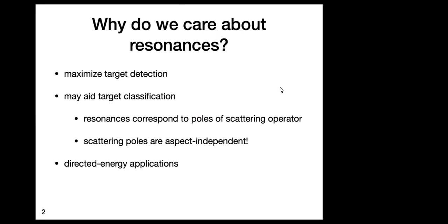This is mostly about how do we find target resonances. First: what is a resonance? A resonance is a peak in the energy that is scattered. Why would you be interested in that? If you're trying to detect a very weak target using radar, you'd like to be transmitting the wave that will scatter the most energy back, maximizing target detection.